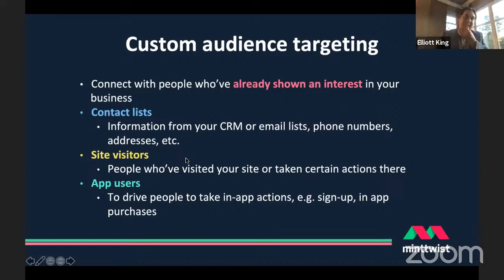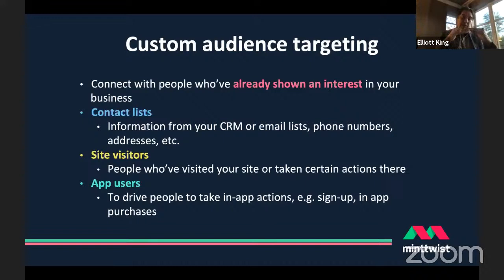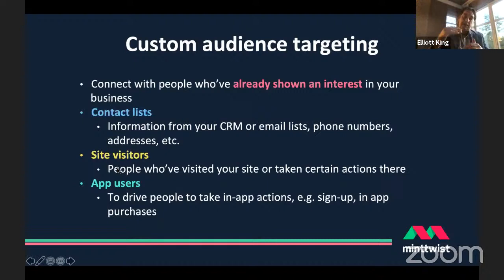For remarketing: if we've run a specific awareness campaign that sent people to a webpage and we've got analytics and the Facebook cookie set up on our web pages — which a properly run digital agency would do — we can say 'advertise to all the people who've been to this particular product page in the last two or four weeks.' The cookie data will allow Facebook's advertising platform to match those cookies to individuals on its platform.